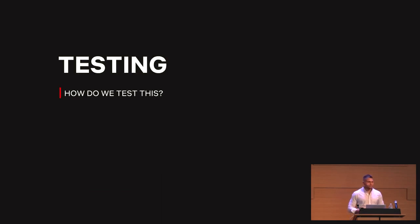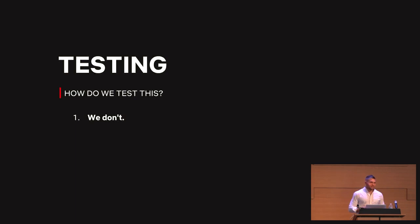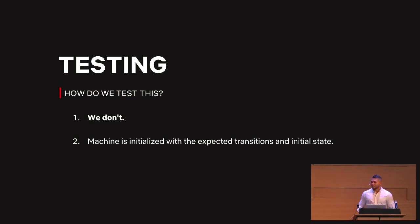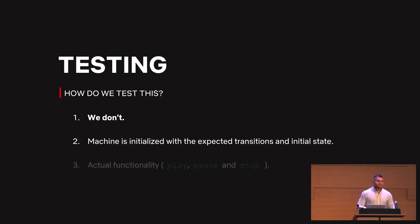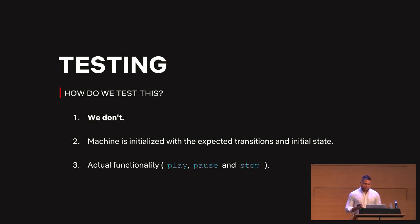So how do we test this? We don't — not the machine itself. If you're using a state machine library, you don't have to test that it validates transitions correctly, because that's the state machine's job. Instead, you test whether the machine was initialized with the right transitions and the right initial state. Then you focus on testing real functionality: the play function actually does what it's supposed to do, same for pause and stop — nothing related to state.